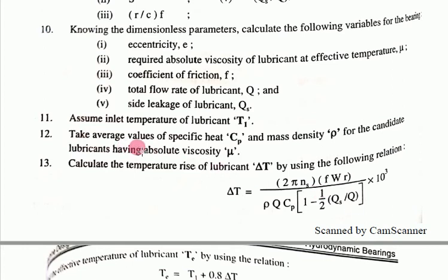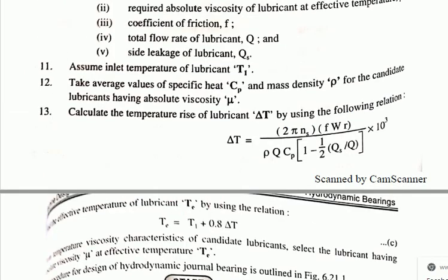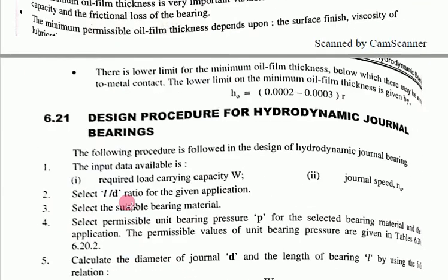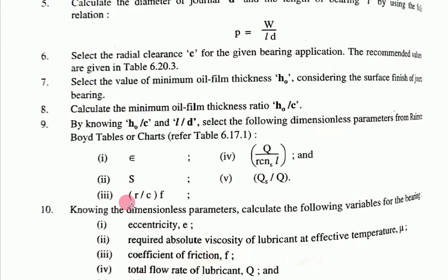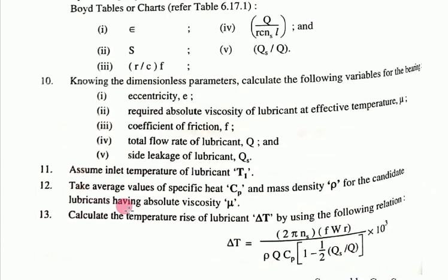Take the average value of specific heat Cp and mass density rho for the candidate lubricants having the required absolute viscosity. Finally, calculate delta T (temperature rise). This is the basic procedure for designing a hydrodynamic journal bearing, and we must follow this procedure when solving bearing examples. Next time we will see the temperature rise in hydrodynamic journal bearing. Thank you.